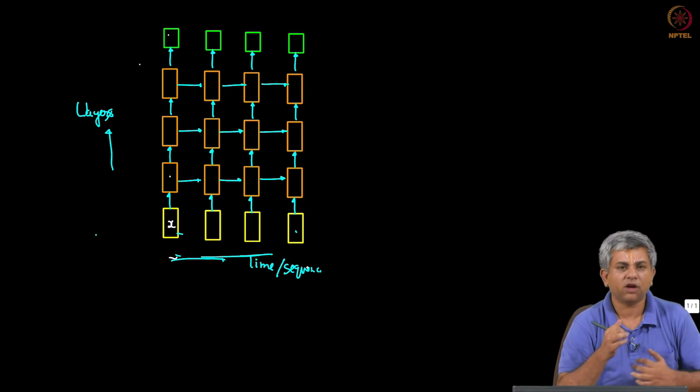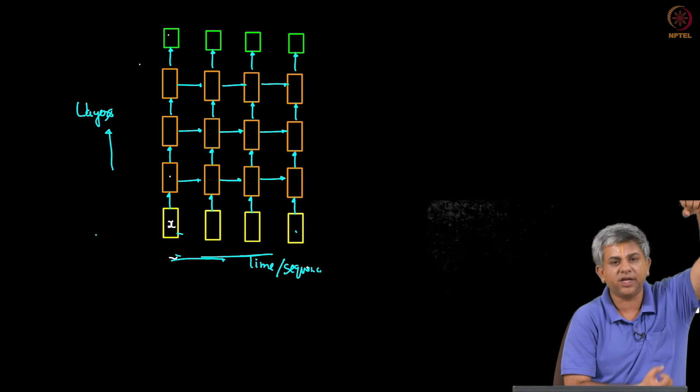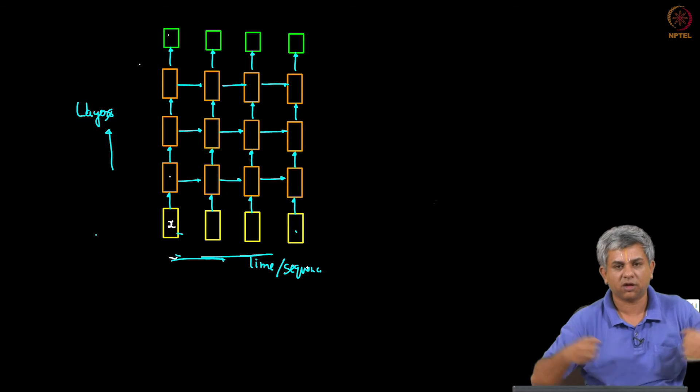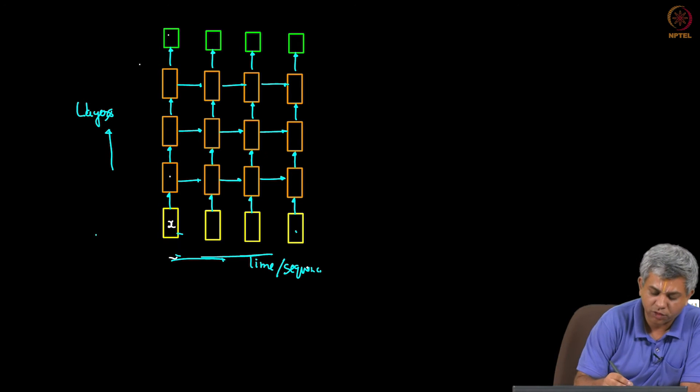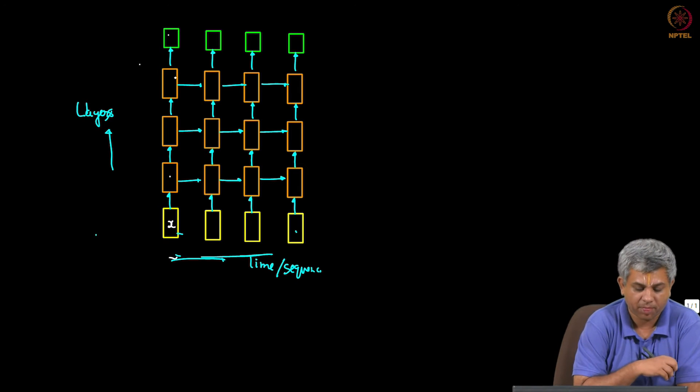So now what is it? You can think of this as if it is a single deep neural network unrolled. That is all, it is unrolled and it is the same structure repeated again and again. Of course the weights are also always the same.